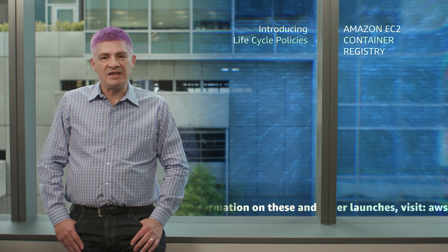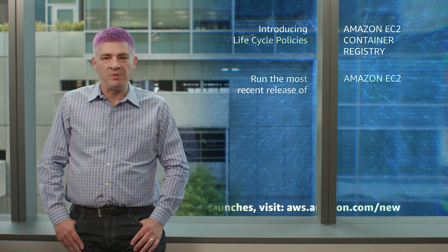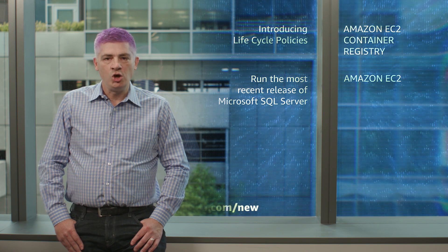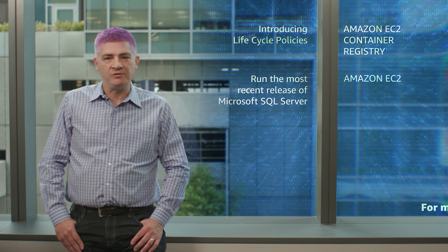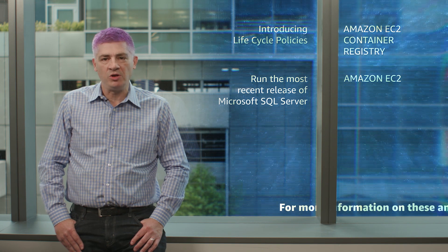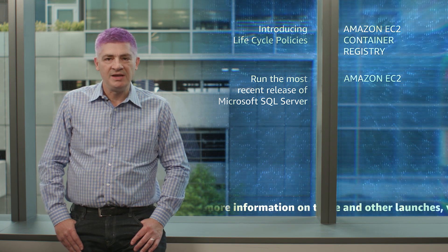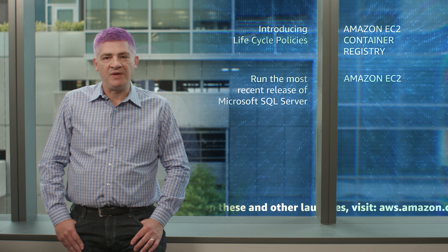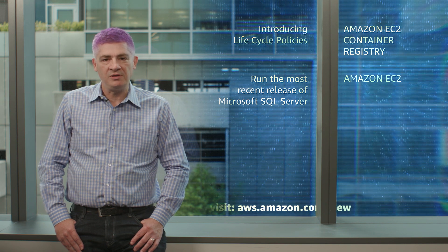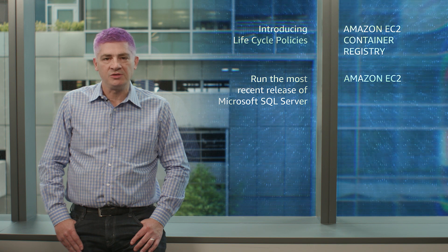The next announcement we want to highlight is that you can now run the most recent release of Microsoft SQL Server on Amazon EC2. You can even deploy your Microsoft SQL Server 2017 Always-On Availability groups across multiple AWS Availability Zones. This release allows you to take advantage of all the latest features available in Microsoft SQL Server and also benefit from numerous AWS security features.